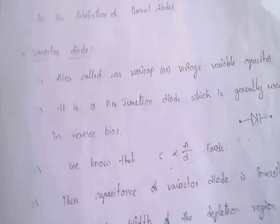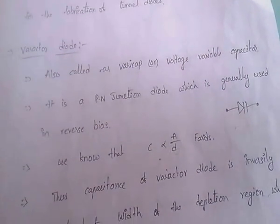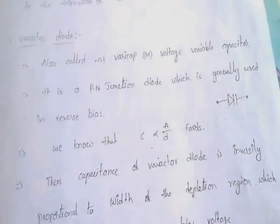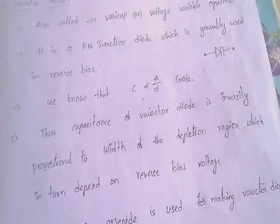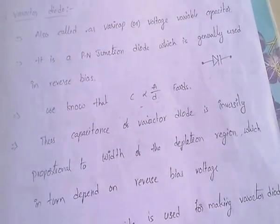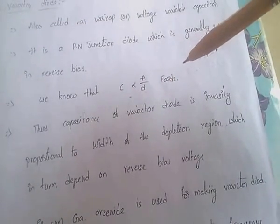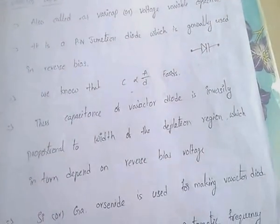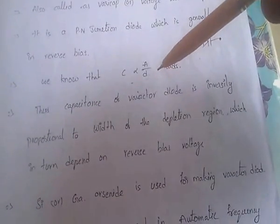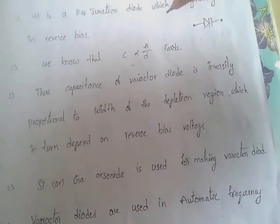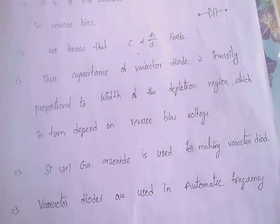The varactor diode is also called varicap, or voltage variable capacitor. It is a P-N junction diode which is generally used in reverse bias. The capacitance C is proportional to A/D, i.e., C = εA/D. The capacitance of the varactor diode is inversely proportional to the width of the depletion region, which in turn depends on the reverse bias voltage.